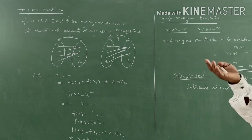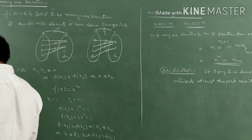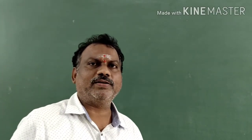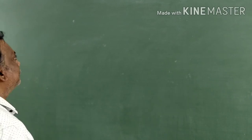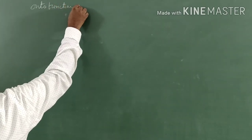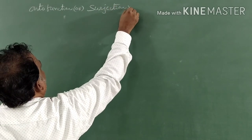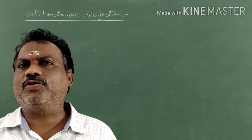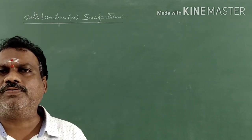The next type is the onto function, also called a surjection. We have completed one-one and many-one. One-one has the alternate name injunction. Many-one has no other alternate name. Surjection is the alternate name for onto function.